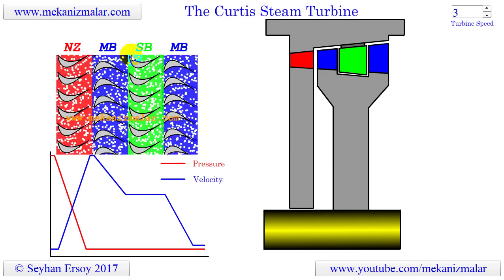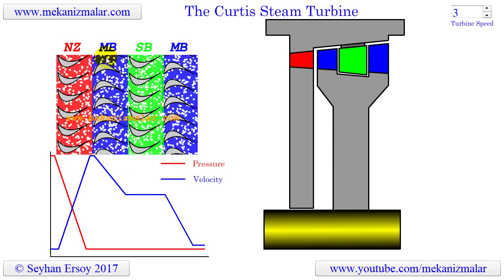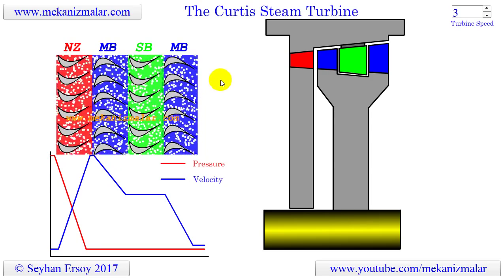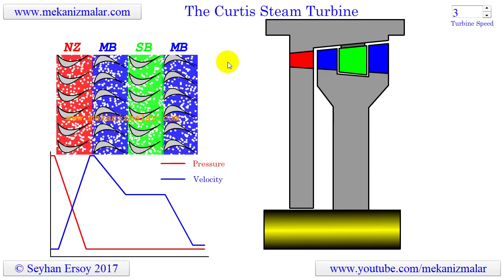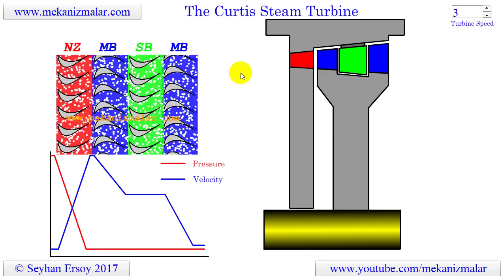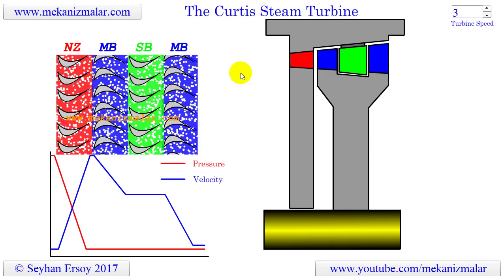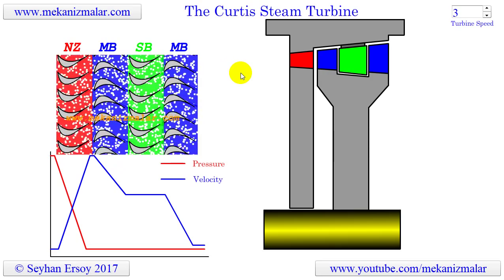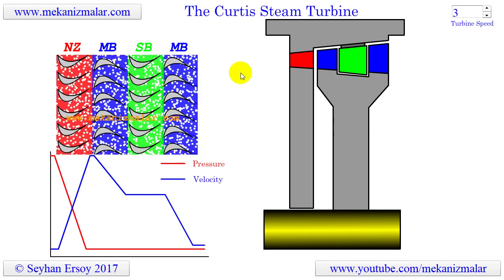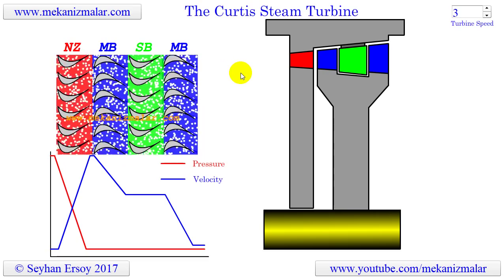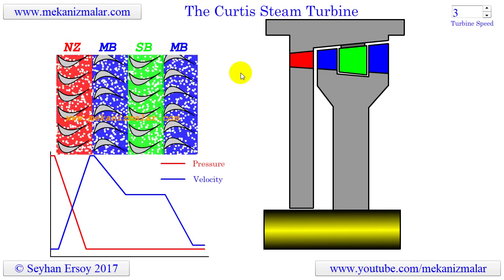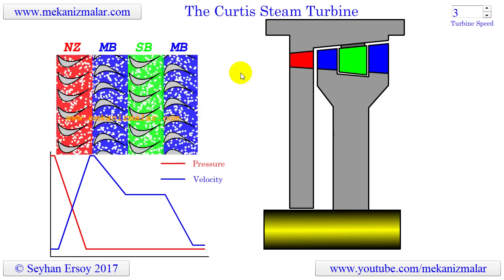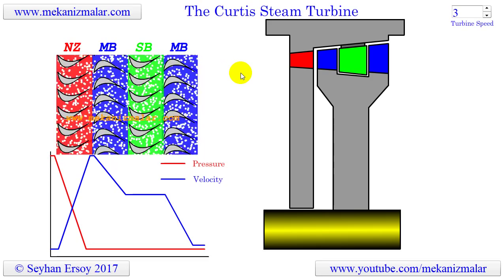The vast majority of steam turbines are axial flow reaction turbines. Action type steam turbines are limited to low power generation applications, or Curtis wheel type action turbines can be used as the first stages of large axial flow reaction turbines.